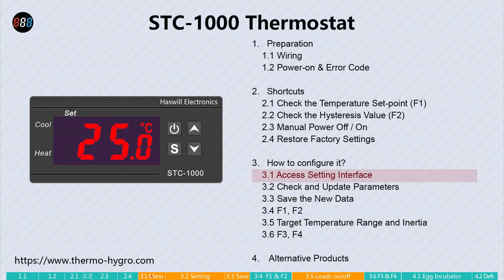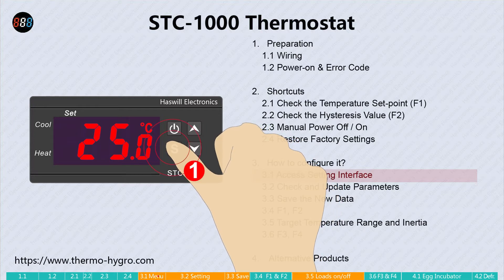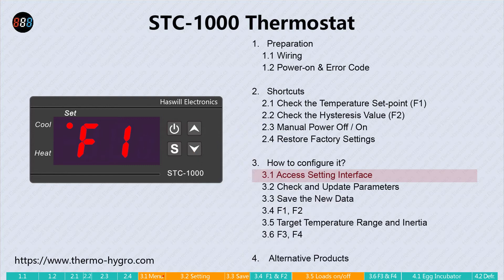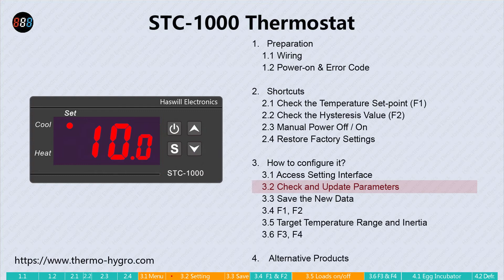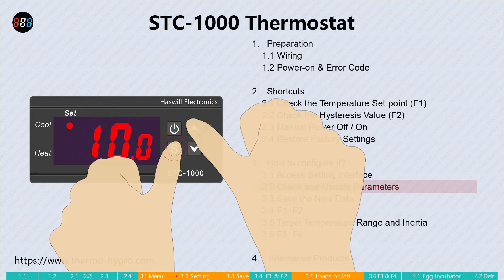The first step is to enter the menu list. Press and hold the set key for three seconds. You will see F1 on the screen, and the set indicator will light up. Press the set key to check the existing value. To change it, press and hold the set button, meanwhile press the arrow key to modify it.